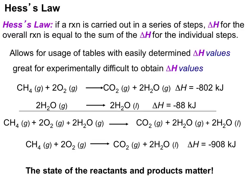Hess's law basically states that if a reaction is carried out in a series of steps, the delta H for the overall reaction is equal to the sum of the delta H values for those individual steps.